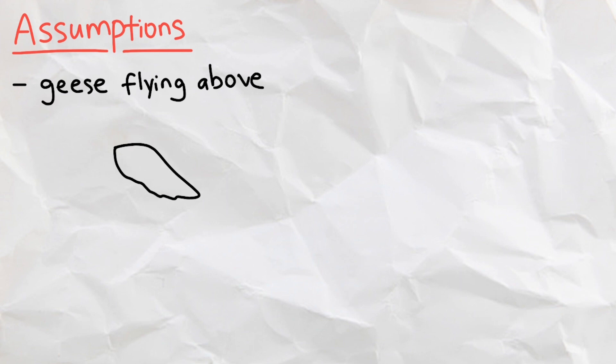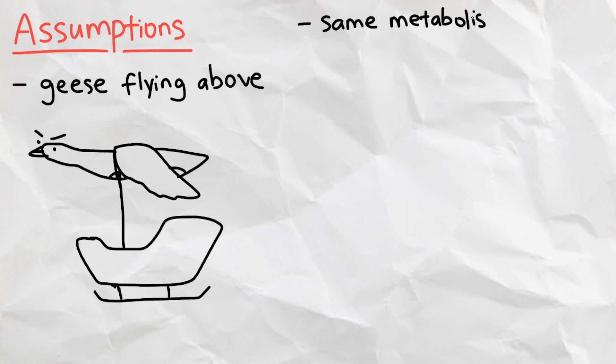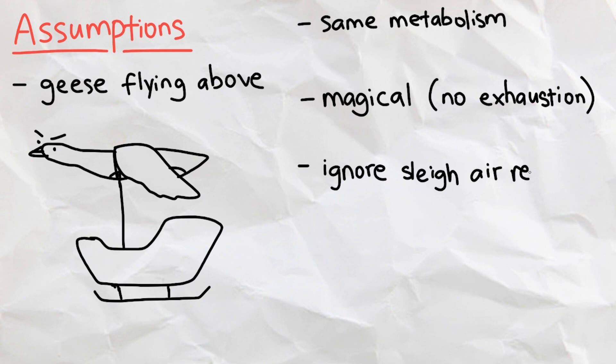For some assumptions, we are assuming that the geese are flying above the sleigh and dangling below like so, the geese all have the same metabolism and are magical so that they don't get exhausted, ignoring the air resistance by the hypothetical sleigh, and that the weight of the harness for the geese and Santa himself is ignored since the sleigh is much heavier.